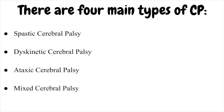Dyskinetic cerebral palsy. People with dyskinetic CP have problems controlling the movement of their hands, arms, feet, and legs, making it difficult to sit and walk. The movements are uncontrollable and can be slow and writhing or rapid and jerky. Sometimes the face and tongue are affected, making it hard to suck, swallow, and talk. A person with dyskinetic CP has muscle tone that can change — varying from too tight to too loose — not only from day to day but even during a single day.